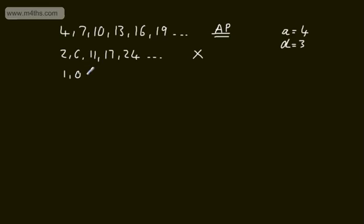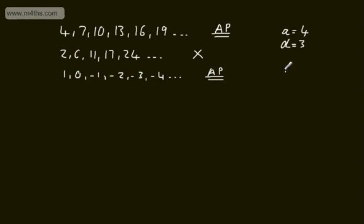Let's look at another one: 1, 0, −1, −2, −3, −4, and so on. This is going down by 1 each time, so it is arithmetic. We can say the first term A is 1, and the common difference is −1. That's a nice example of an arithmetic progression.